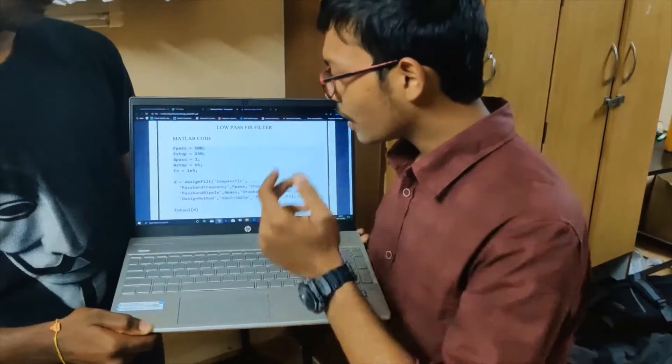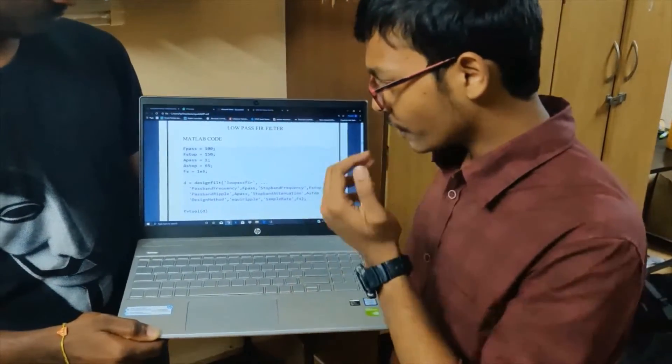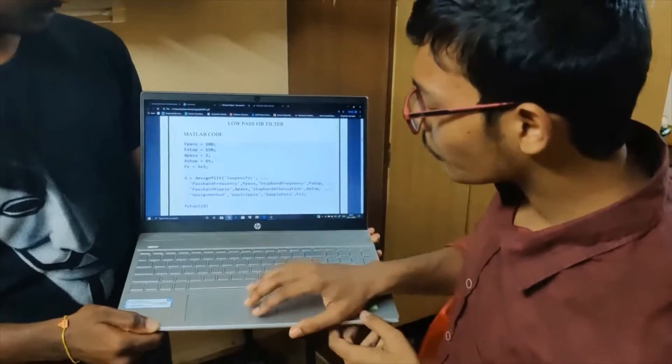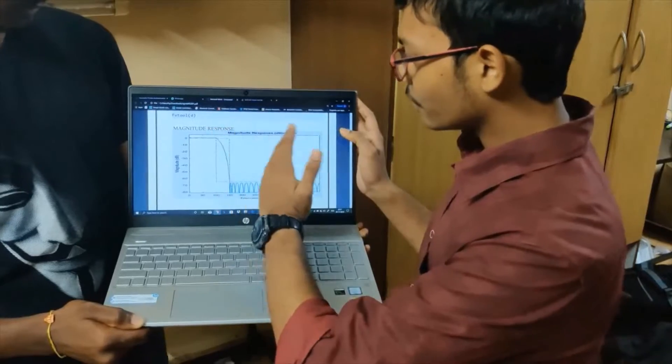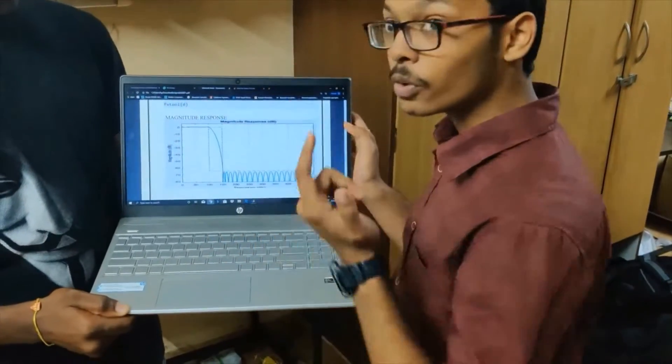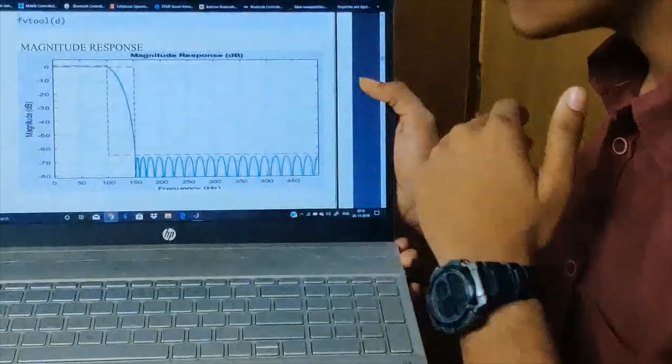Using this code, we have to enter the A pass, A stop, and the sample frequency. With that, we will come to know the graph of that frequency. For the low pass filter, the left side of the signal will be allowed to go for attenuation and the right side will be denied.